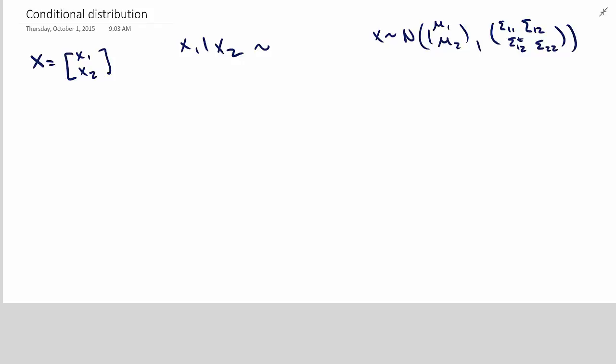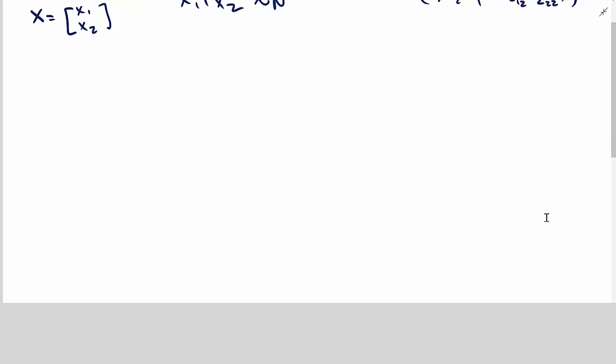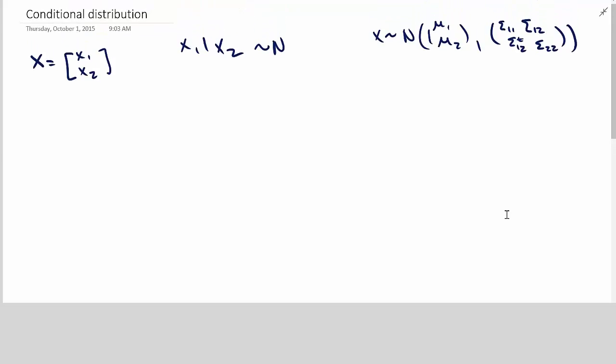So what I'd like to know is what's the distribution of x1 given x2. And we know that it's normally distributed because we've mentioned earlier that all the conditional distributions are normal. But what's the variance and covariance? So let me just write out the answers first, and then I'll show you a nifty derivation of this.